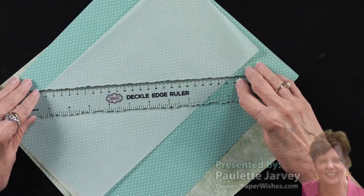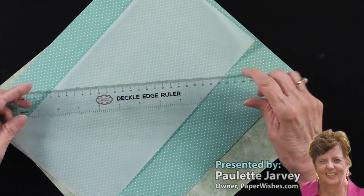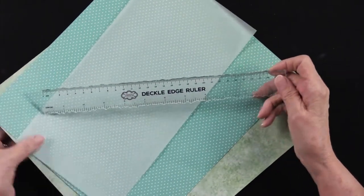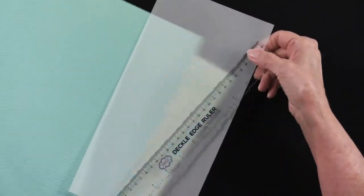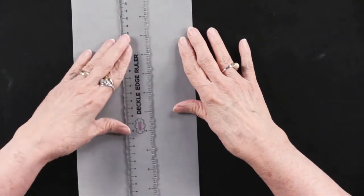You may have seen the new Deckle Edge Ruler by Creative Expressions, but I thought it would be helpful just to see how to use it. So I've got a couple of different kinds of papers. Now, as you might expect, I'm going to do it first on vellum, because Debbie told me that vellum creates a really wonderful look with it.